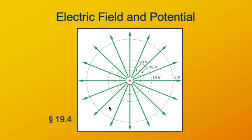The green arrows show the electric field lines around a point charge, all pointing away from the positive charge because the electric field is pushing positive charges away from the source charge. Lines of equal potential are shown as dashed gray lines — these are concentric circles. These particular lines are drawn at 5-volt intervals: 5 volts, 10 volts, 15 volts. The potential increases as we get closer to the charge, and the lines get closer together as the electric field gets stronger.